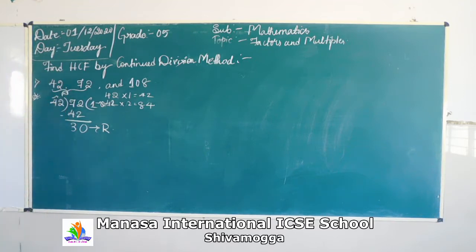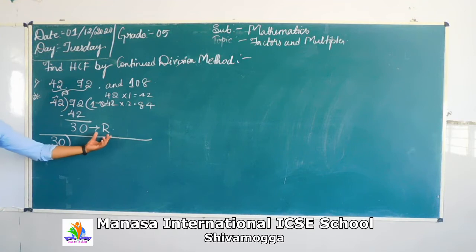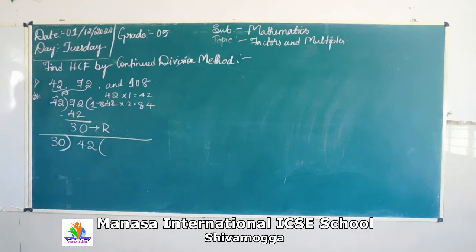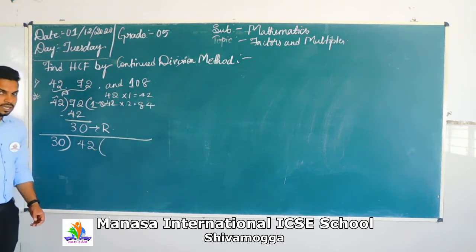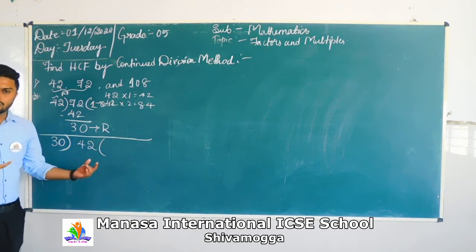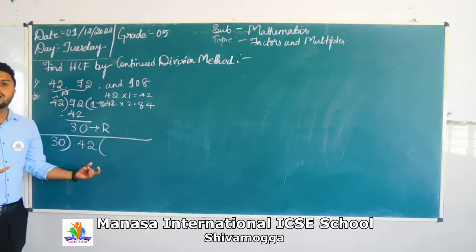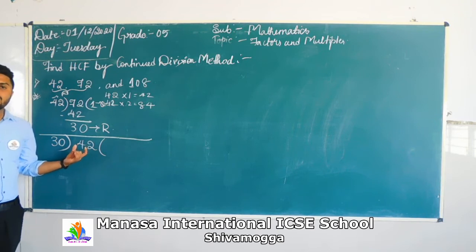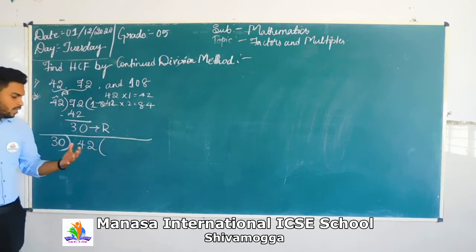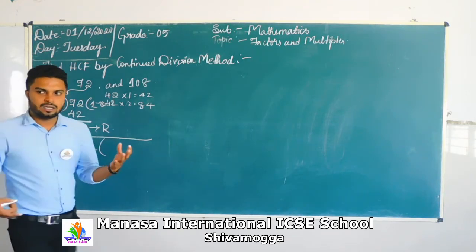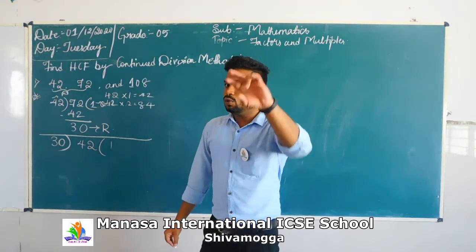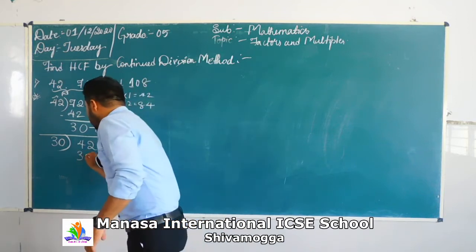Again you are going to take the remainder as well as the divisor. So remainder is 30 and divisor is 42. Now: 30 ones are 30. 30 twos are 60 — cannot take that because it is the larger number. So we take 30 ones are 30. Now subtraction: 42 minus 30 gives remainder 12.